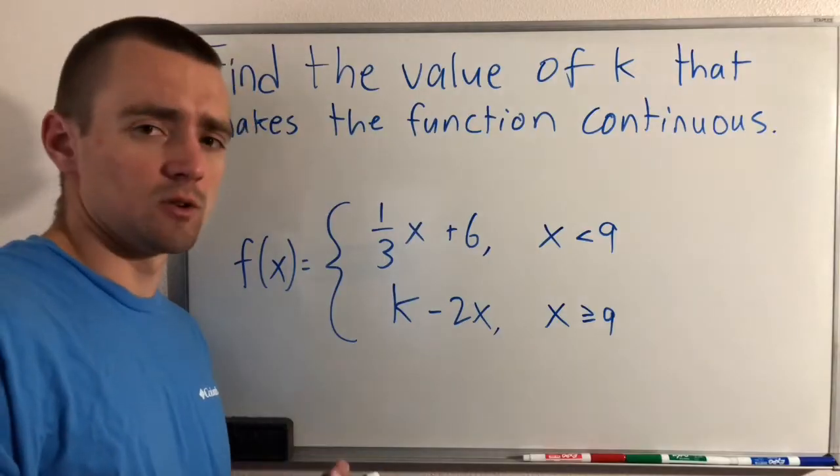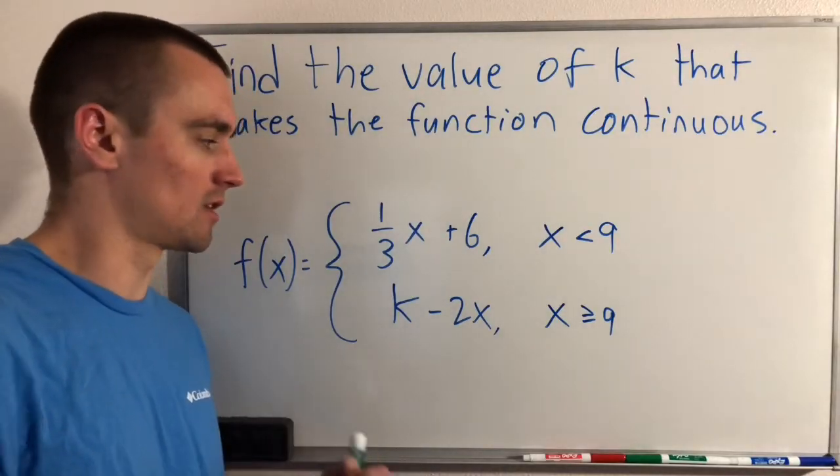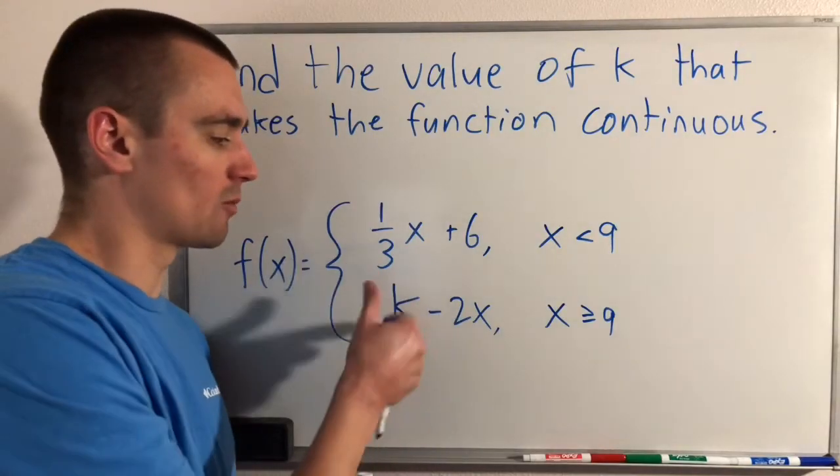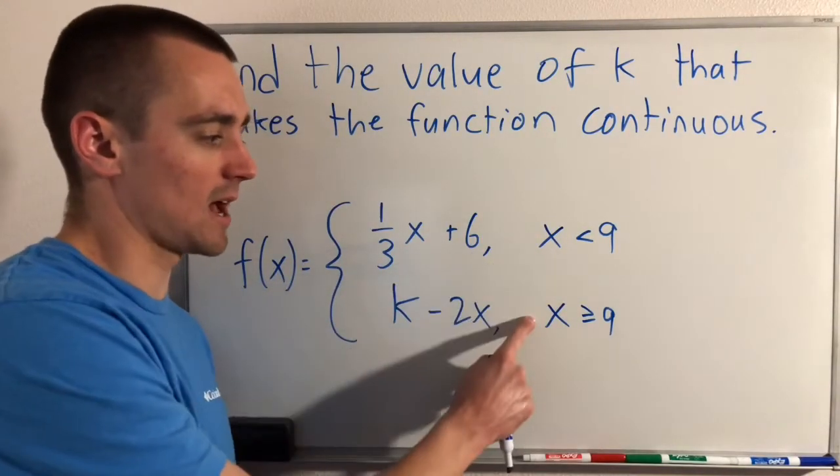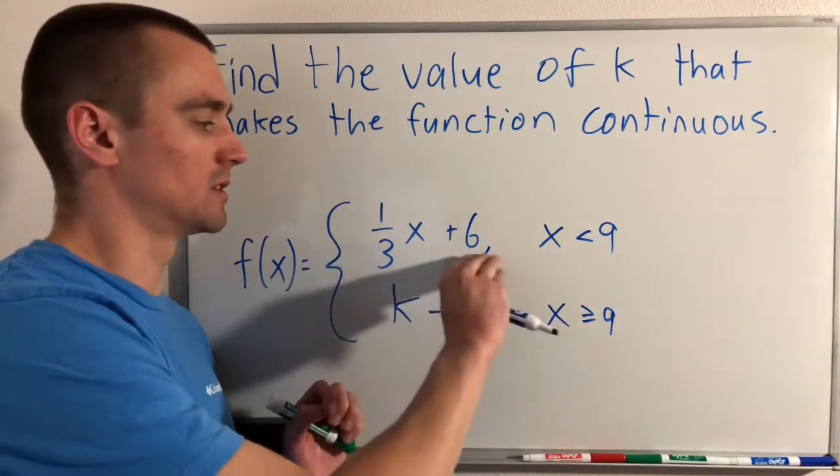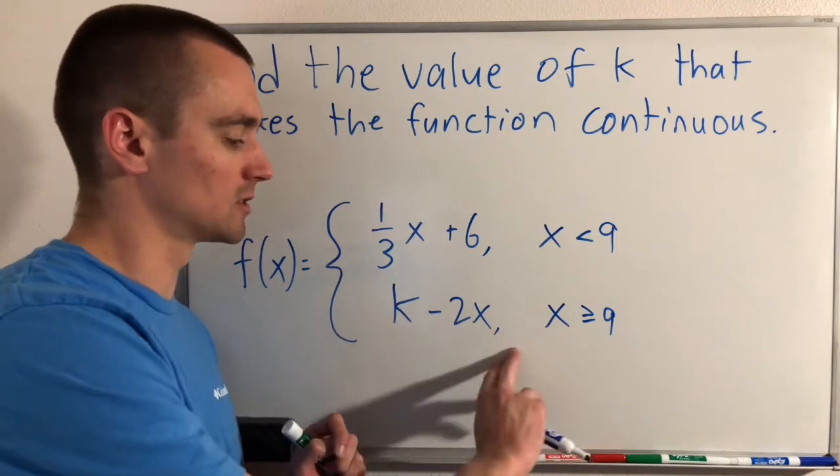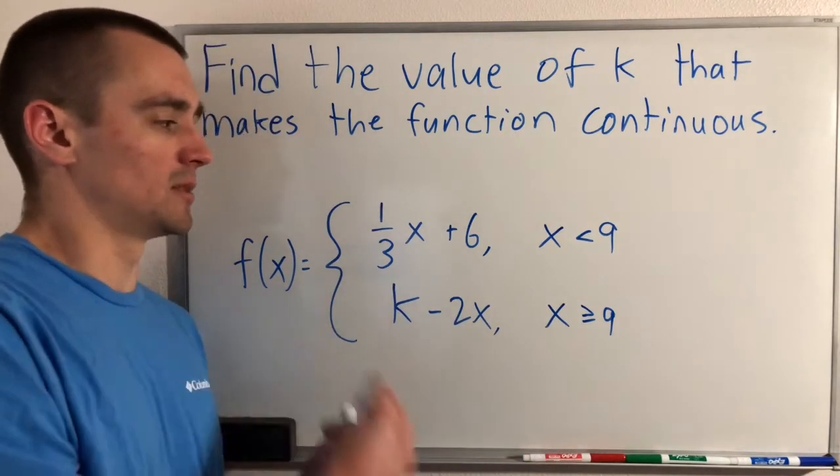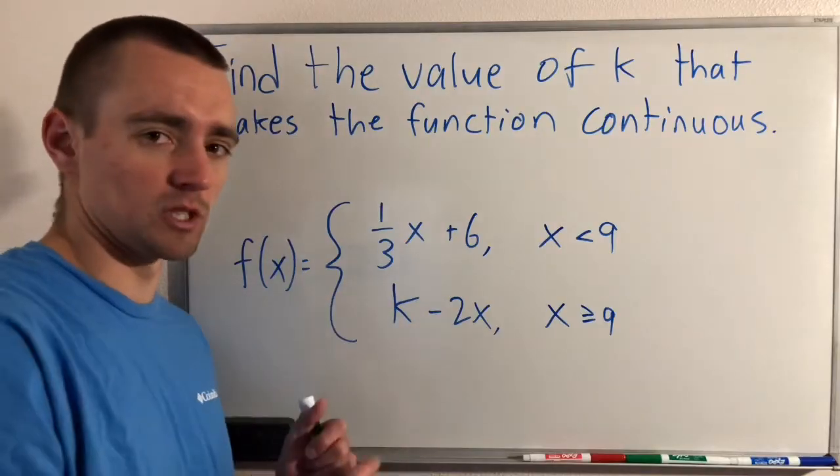What that tells you is the only place we need to make sure this piecewise function is continuous is when we switch from one function to the other, which happens at x equals 9. For all x less than 9, we use this function, and for all x greater than or equal to 9, we use this function to define our f of x. So at x equals 9, we switch between these two.